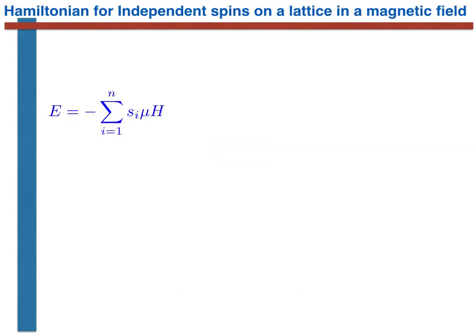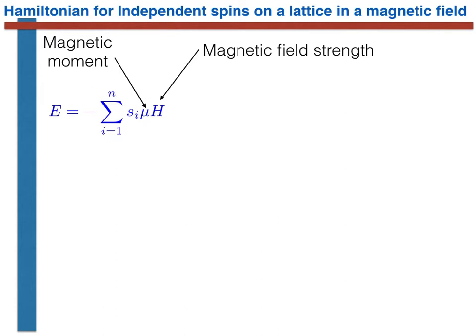The Hamiltonian for the system we are about to study is shown in blue on this slide. This Hamiltonian is frequently used to model spins interacting with an applied magnetic field. As such, mu is the magnetic dipole moment of a single spin and h is the magnetic field strength — these quantities can both be thought of as parameters. We are considering the canonical ensemble, but we are not really studying a system with a constant volume; only the number of particles and the temperature are constant, as it makes little sense to talk about the volume of this system of magnetic spins.